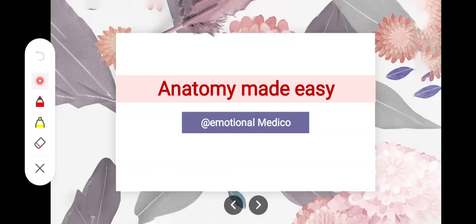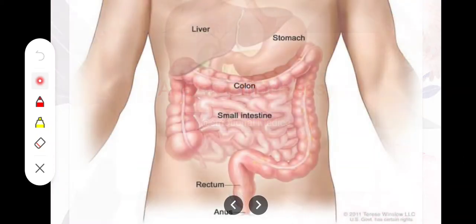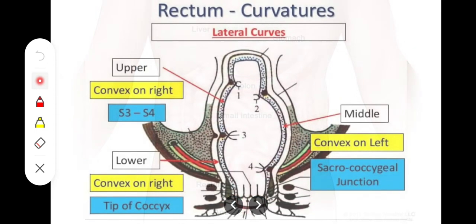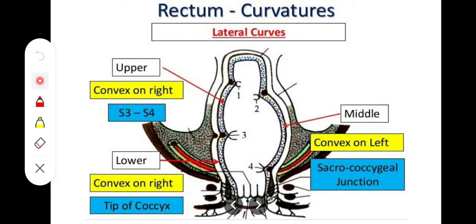In this video we will take a look at the different relations and curvatures of the rectum. The rectum is the continuation of the sigmoid colon, lying in the concavity of the sacral vertebrae, and it is continuous downward with the anal canal. The rectum has certain curvatures which we need to study — there are lateral flexures and anteroposterior curvatures.